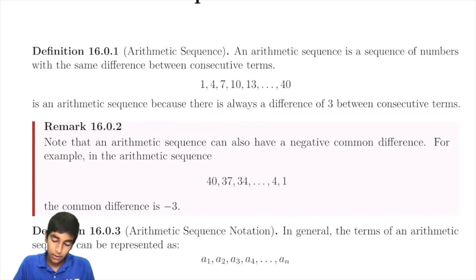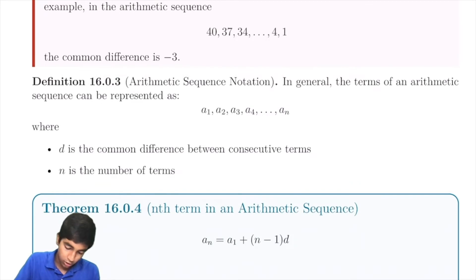An arithmetic sequence has a common difference and we generally use this notation. d is the common difference, n is the number of terms. And the nth term is just the first term plus the number of terms in between, n-1, times the common difference.